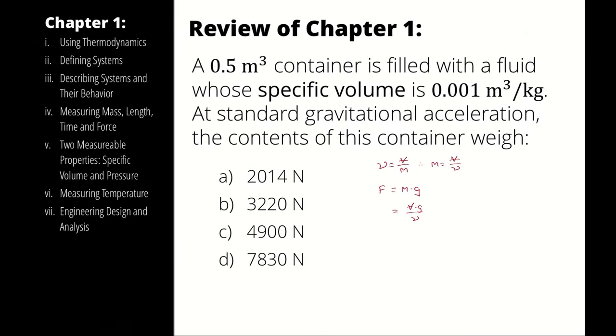The volume is 0.5 cubic meters, dividing by 0.001 cubic meters per kilogram is going to yield a quantity in kilograms. And since it's 0.5 divided by 0.001, that's equivalent to 0.5 times 1,000, which would be about 500.